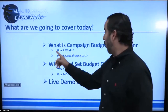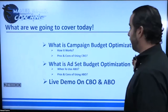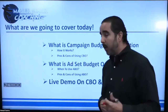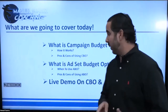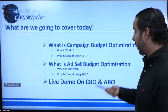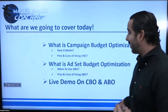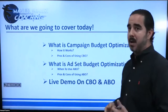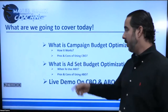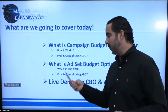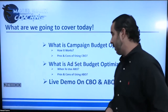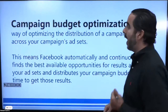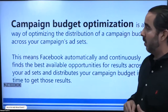So we want to fix that. We're going to go over: what is campaign budget optimization, what is it and how it works, pros and cons of using CBO. Then we're going to talk about what is ad set — also known as ABO — budget optimization, when to use ABO, pros and cons of using ABO. And then we're going to do a live demonstration on CBO and ABO.